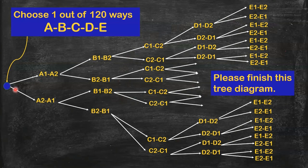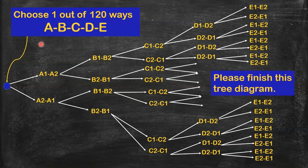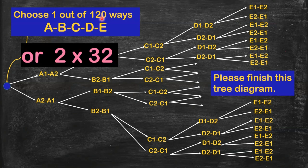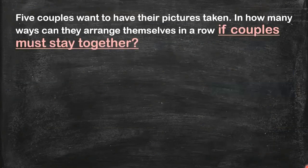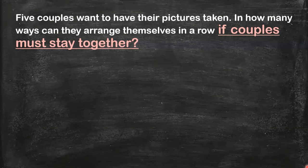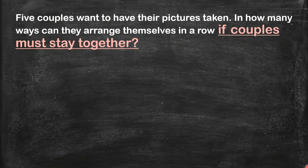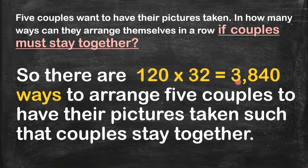But let me remind you again, this is only for one arrangement out of 120 ways. So do you imagine that? So if we take two arrangements out of 120 ways, we will have 32 plus 32 possible arrangements. So if we go back to our question, there are 120 times 32 ways on how to arrange the 5 couples such that the couples stay together. So we have 3,840 ways.